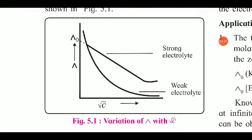On the x-axis, if we move from left to right, square root of C increases, meaning concentration increases. If we move from right to left, concentration decreases. For strong electrolytes, as we move from right to left, the molar conductivity increases in a straight line manner — giving a linear graph.